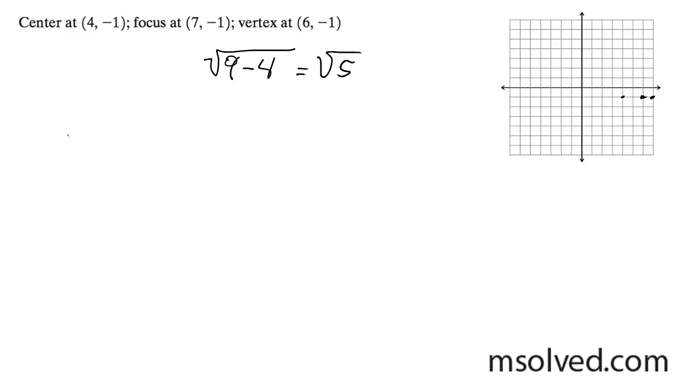So we're going to get the equation with the center. For x, moving to the right, it's (x - 4)² over the distance from the center squared, which is 4. Then minus y, moving one down, so it's (y + 1)² over 5 equals 1.